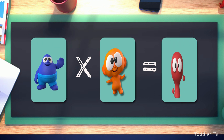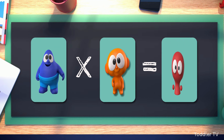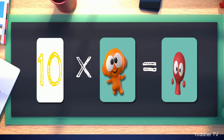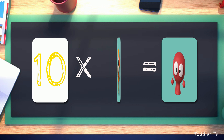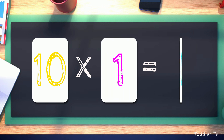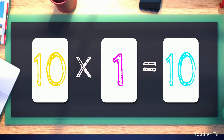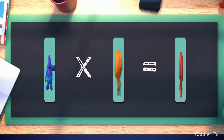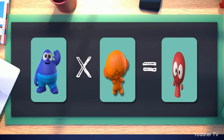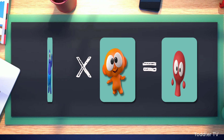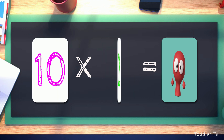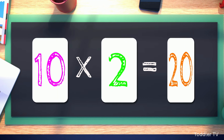Let's try this once more. Ten times one equals ten. Ten times two equals twenty.